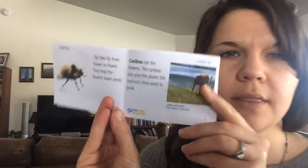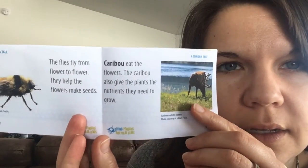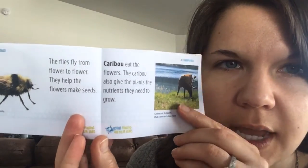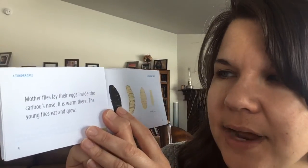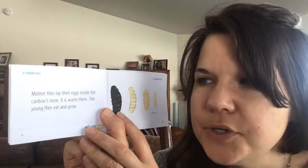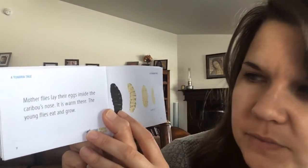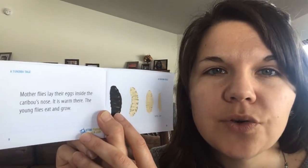The flies fly from flower to flower and help the flowers make seeds. Caribou eat the flowers, and the caribou also give the plants the nutrients they need to grow. Are you ready for this part? Mother flies lay their eggs inside the caribou's nose — it is warm there — and the young flies eat and grow.